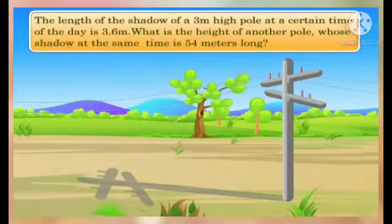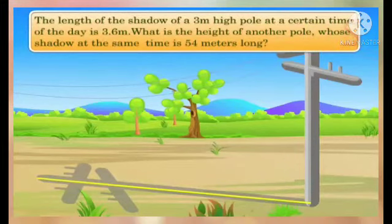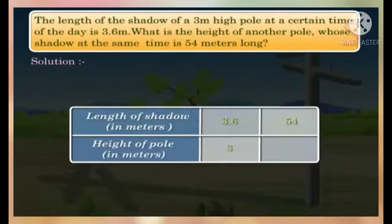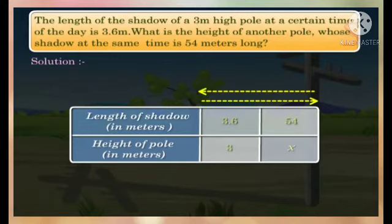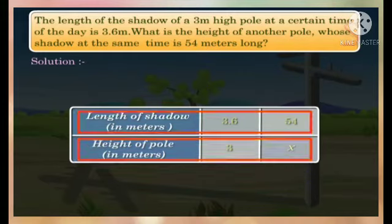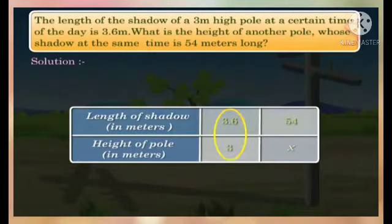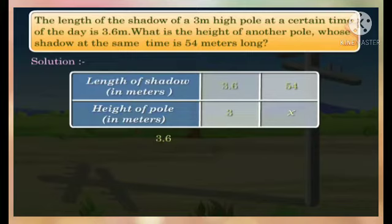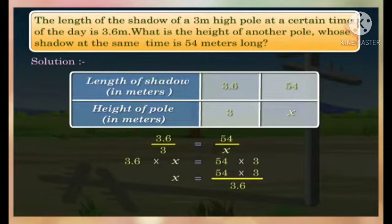The length of the shadow of a 3-metre high pole at a certain time of day is 3.6 metres. What is the height of another pole whose shadow at the same time is 54 metres long? Let the required height of the pole be x metres. As height and shadow length are in direct proportion, their ratios are constant: 3.6/3 = 54/x. Cross-multiplying and simplifying, x = 45. So the height of the pole is 45 metres.